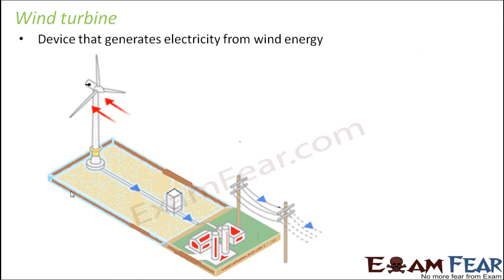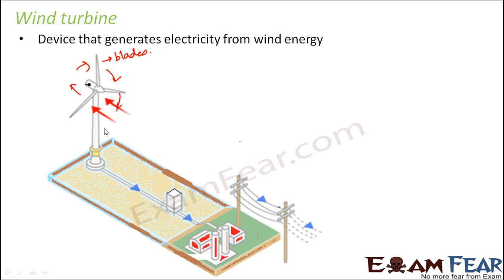A wind turbine is the device that specifically generates electricity from wind energy. The turbine has blades with a slightly curved shape so they can capture as much wind energy as possible. As the wind passes by, the blades start spinning around, and within the turbine, wind energy gets converted to electrical energy. The electricity generated is shown flowing outward from the turbine.